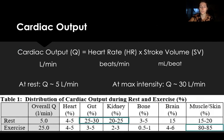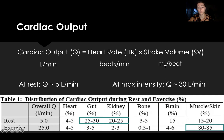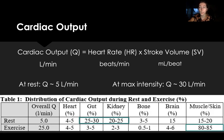Cardiac output is usually symbolized with a Q, and the units are liters per minute. You calculate cardiac output using heart rate (beats per minute) and stroke volume (milliliters per beat). At rest, cardiac output is about 5 liters per minute, but at max intensity it can be about 30 liters per minute, depending on your training.